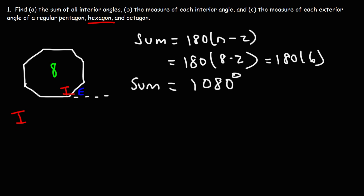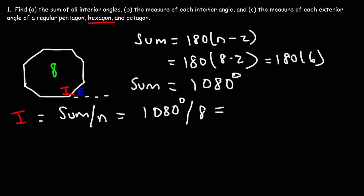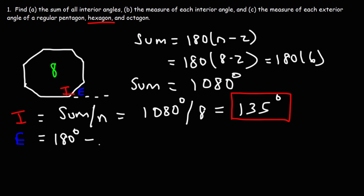To calculate the measure of each interior angle, it's the sum divided by n: 1080 degrees divided by 8 sides, giving us 135 degrees. For the exterior angle, it's the supplement of the interior angle: 180 minus 135 equals 45 degrees.